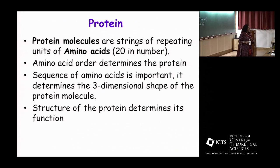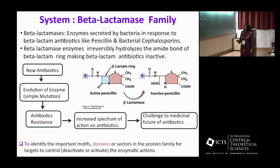I'll be looking in the context of a particular family, which is the beta-lactamase family. These beta-lactamase are proteins or enzymes which are secreted by bacteria in response to antibiotics like penicillin and cephalosporins. What these beta-lactamase proteins do is deactivate penicillin. This is the beta-lactam ring which makes the penicillin inactive. So we try to find out the domains or sectors in the beta-lactamase protein family which we can control or activate to deactivate the action of this protein. That's the system.